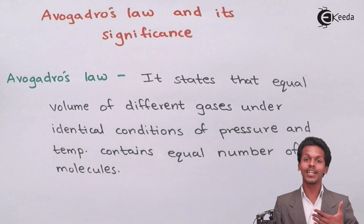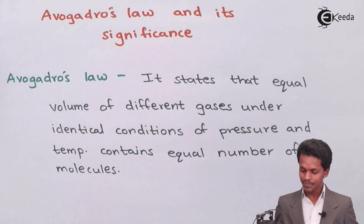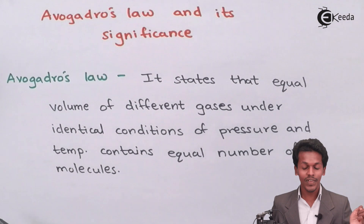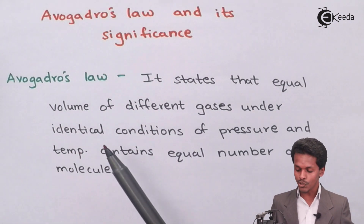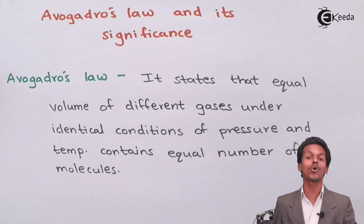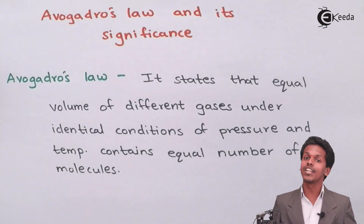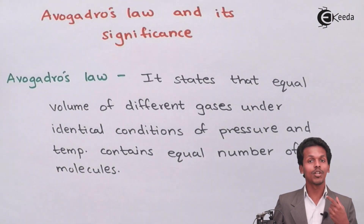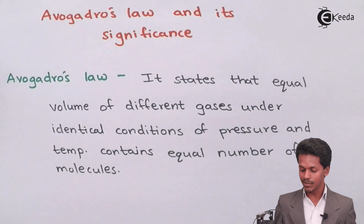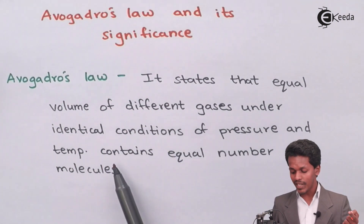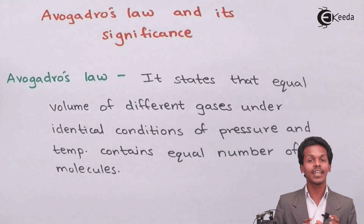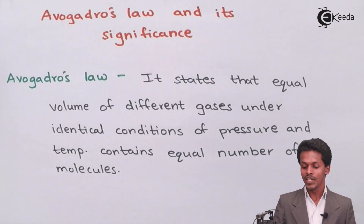Let me elaborate the definition again. Equal volumes of different gases — in this example 22.4 litres — for different gases, that is carbon dioxide and H₂O, under identical conditions: here identical conditions means STP, that is standard temperature and pressure. The temperature and pressure should be constant and must not change, because if these factors change, it would affect the number of particles or the volume of the gases. So at STP, the gases will contain equal numbers of molecules, meaning equal numbers of particles.